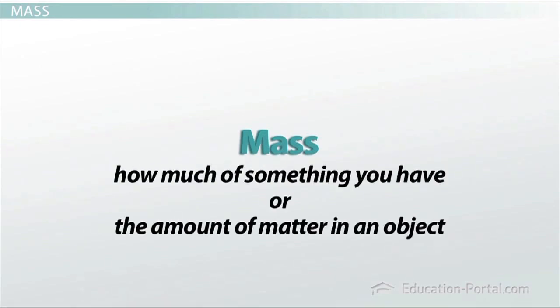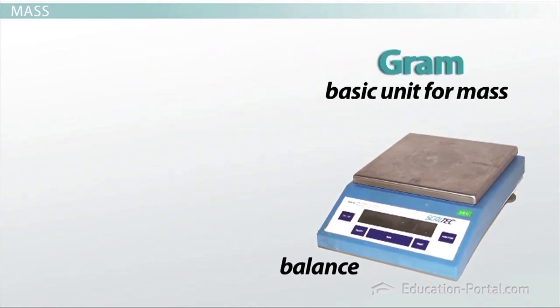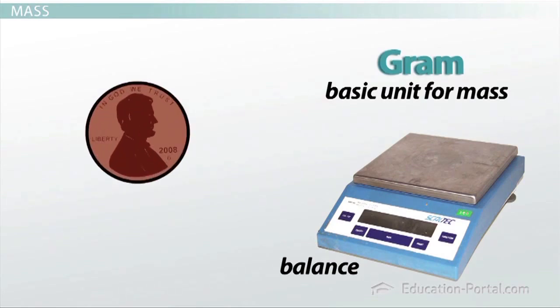Next on our list of important metric quantities is mass. This is one of the most important measurements a chemist makes. Mass is how much of something you have, or the amount of matter in an object. Don't confuse this with volume, which we'll get to in a bit. Mass is measured using a balance, and the basic unit for mass is the gram. To give you an idea of the relative size of a gram, the mass of a penny is about 2.5 grams.